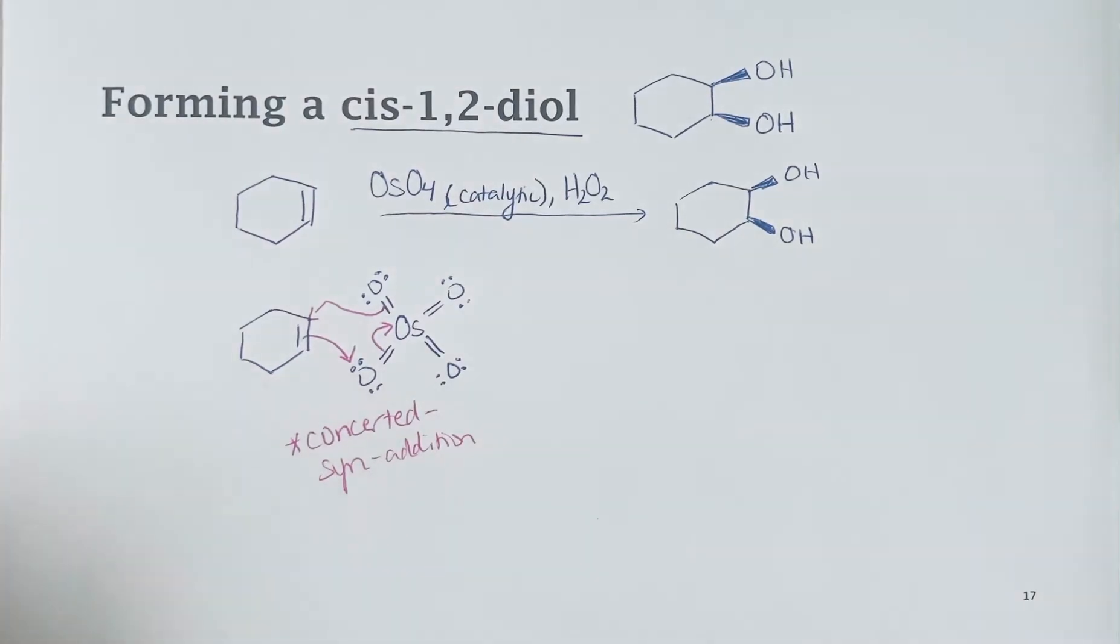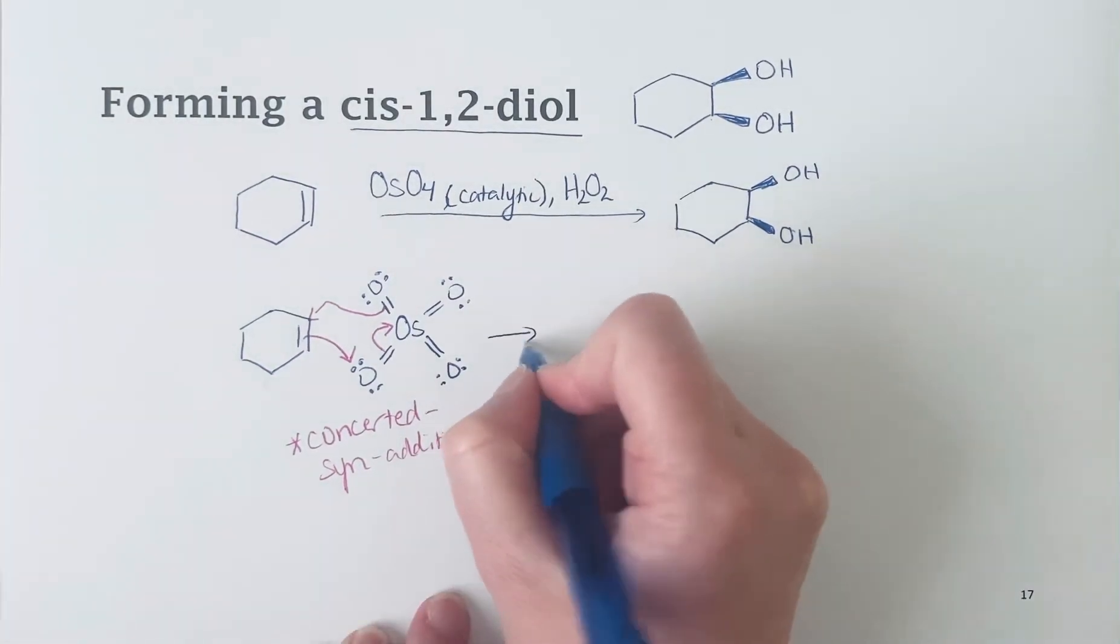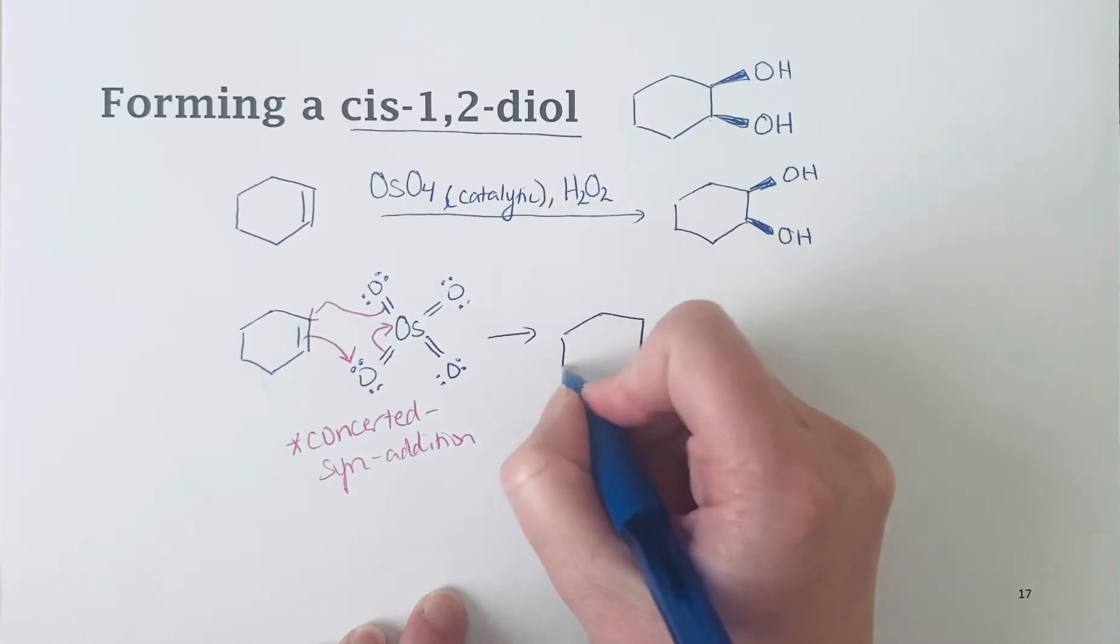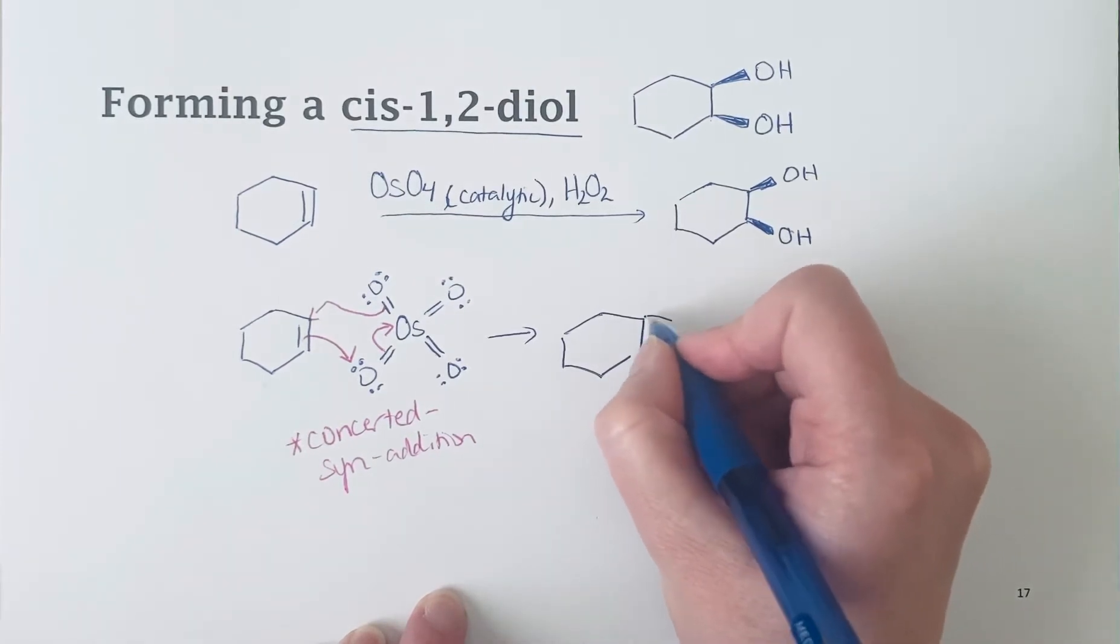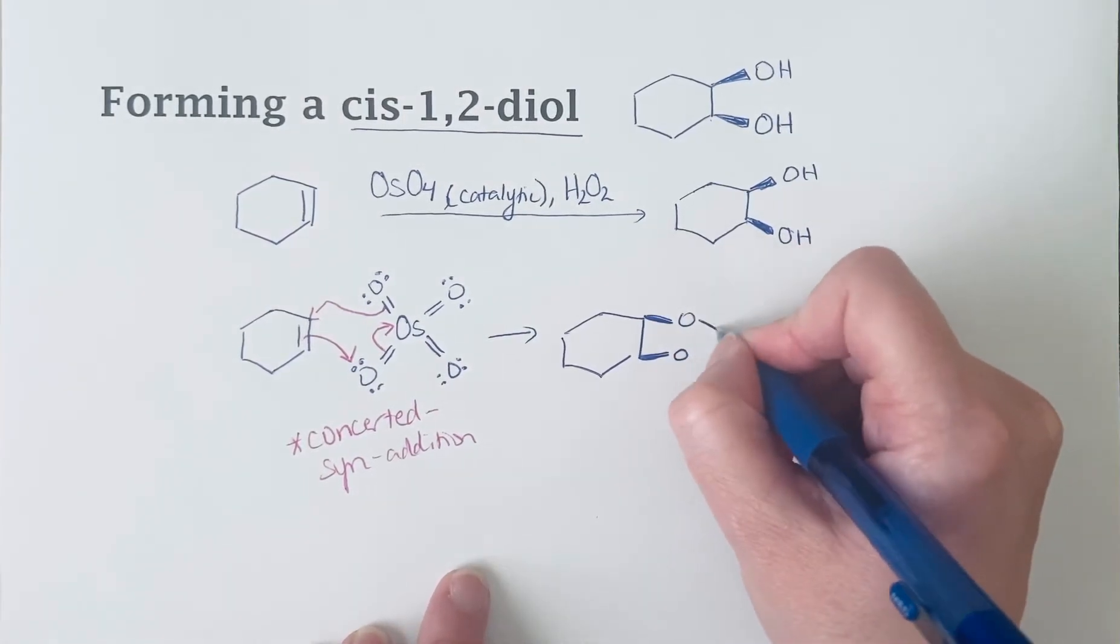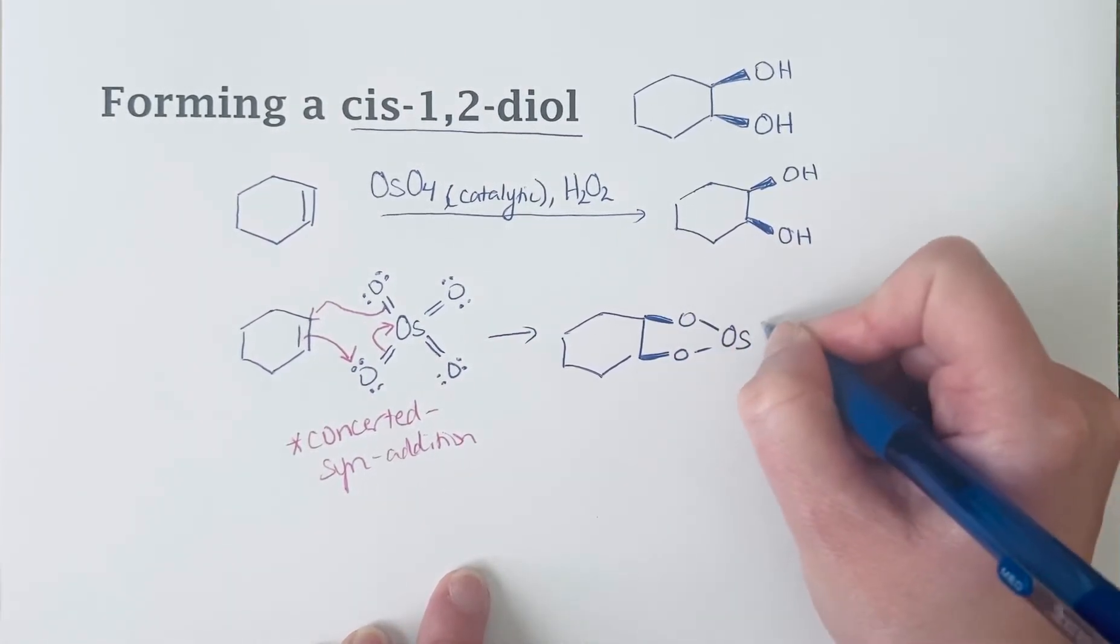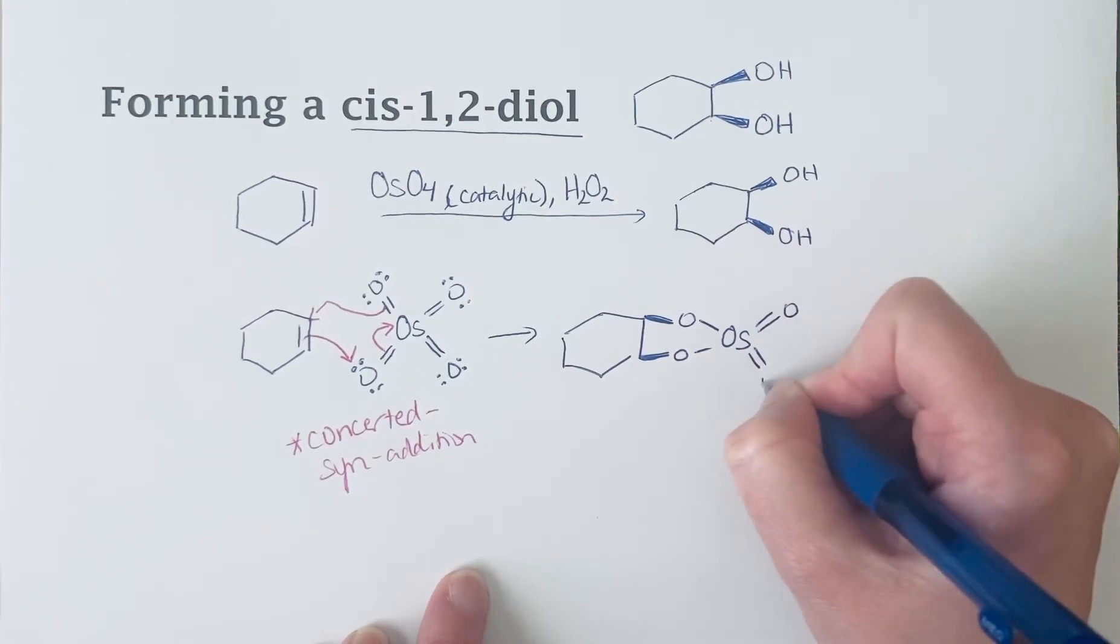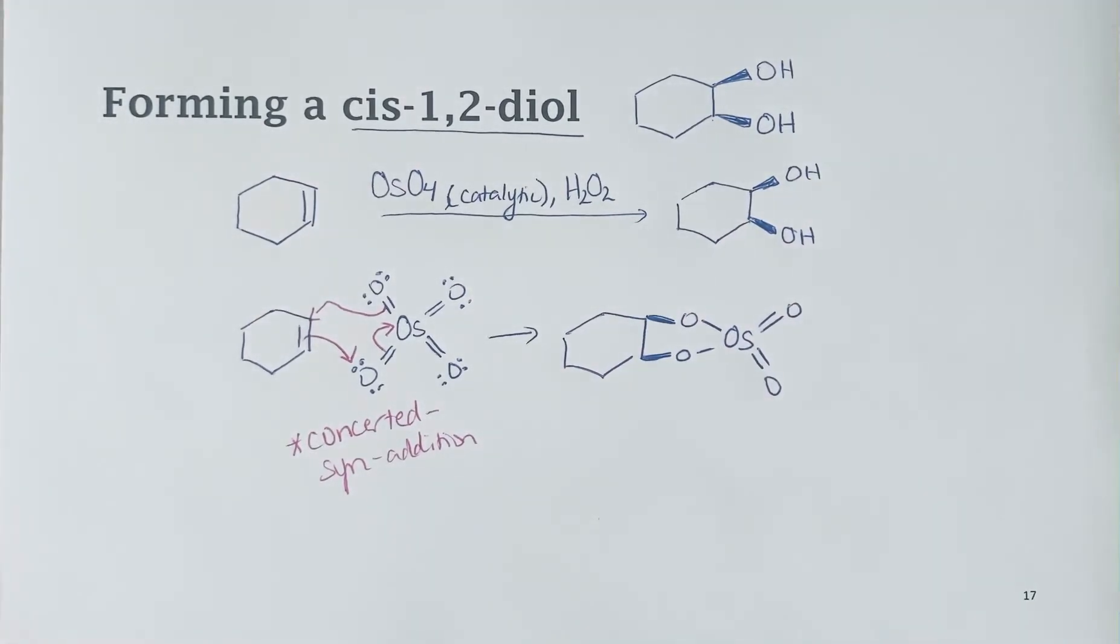What we get here as an intermediate is a molecule where both of these bonds to oxygen—I'm going to use wedges to show that they're on the same side—were formed at the same time. So it's still bound to the osmium, which still has the other two oxygens attached to it.